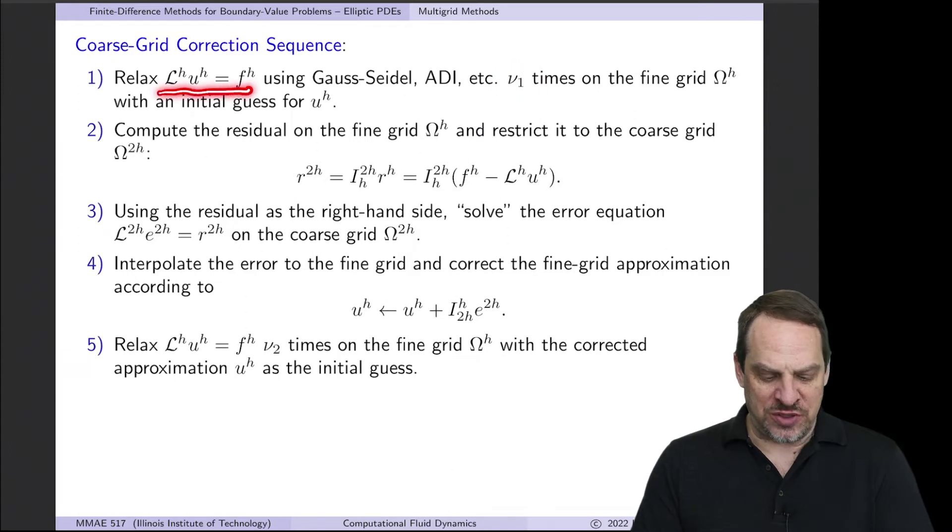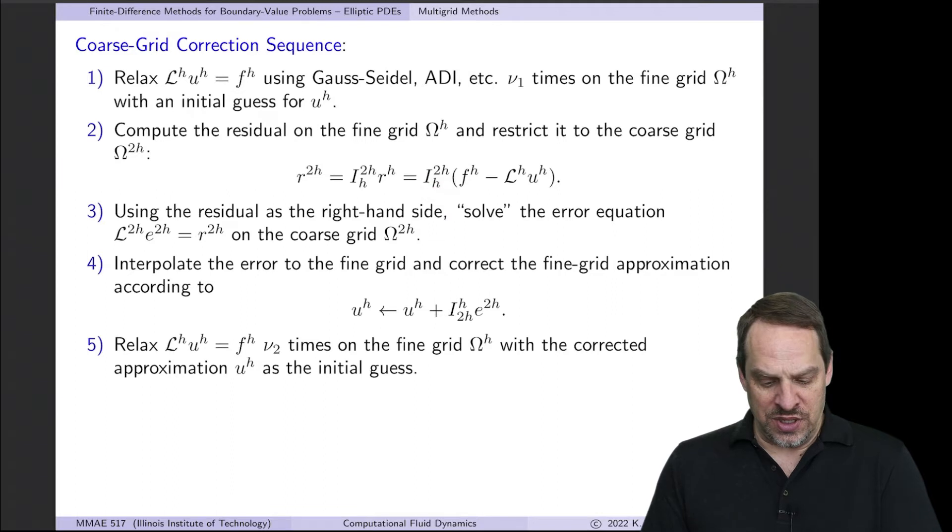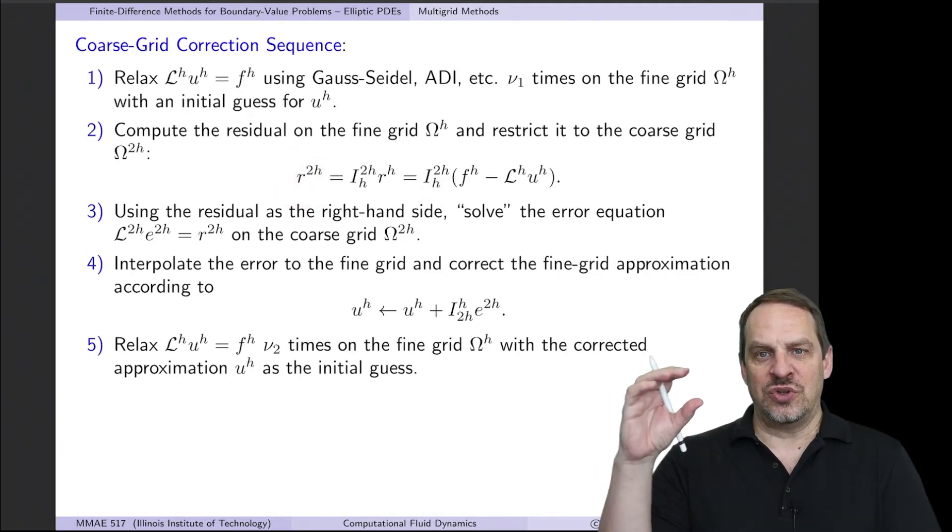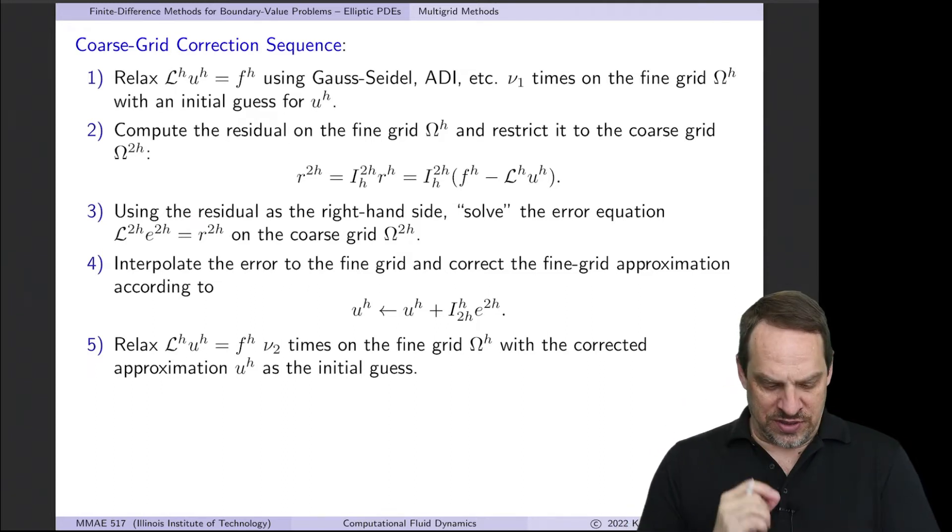Once we have an approximation for U on the fine grid, we're going to use that approximation, you read this from right to left, f minus Lu, which is the residual on the fine grid, and then restrict it using the restriction operator from the fine to the coarse grid to get the residual on the coarse grid. So we start with u^h, we get r^h, we restrict it to 2h, and that's step two.